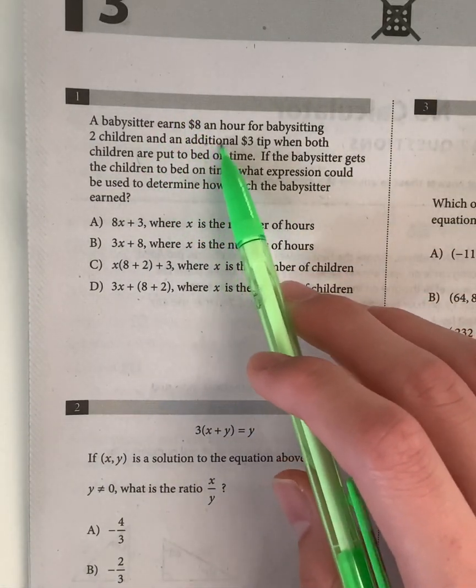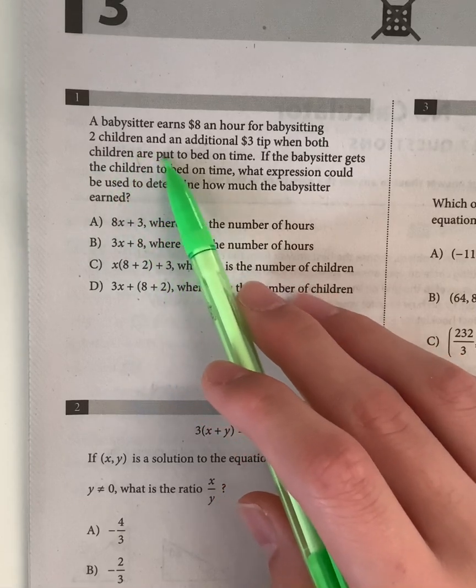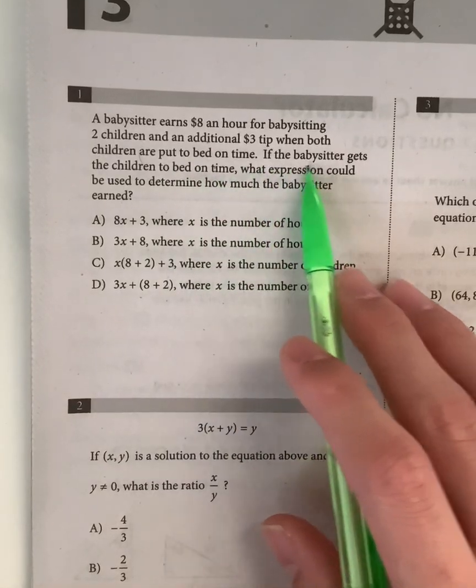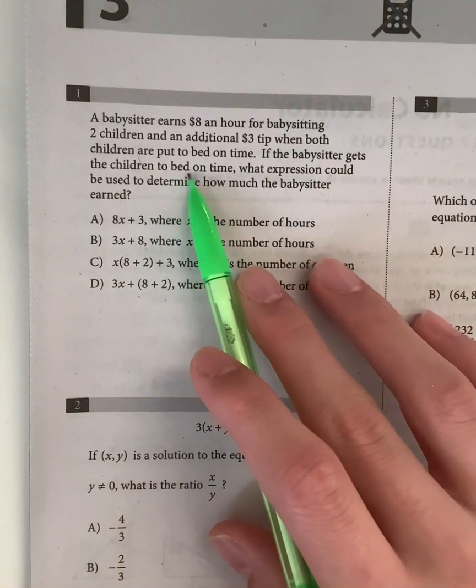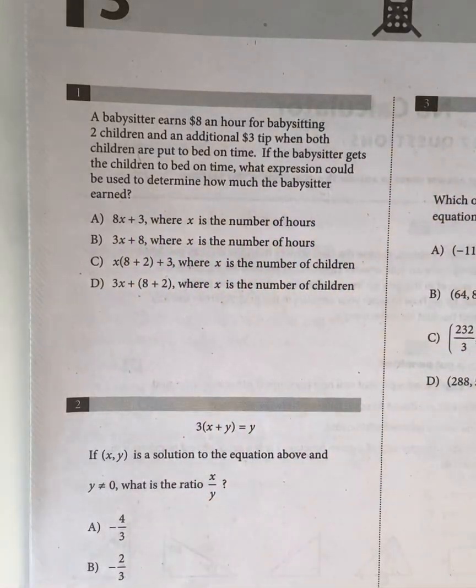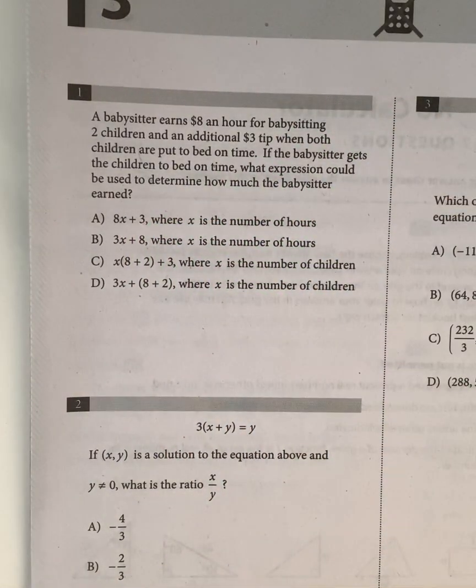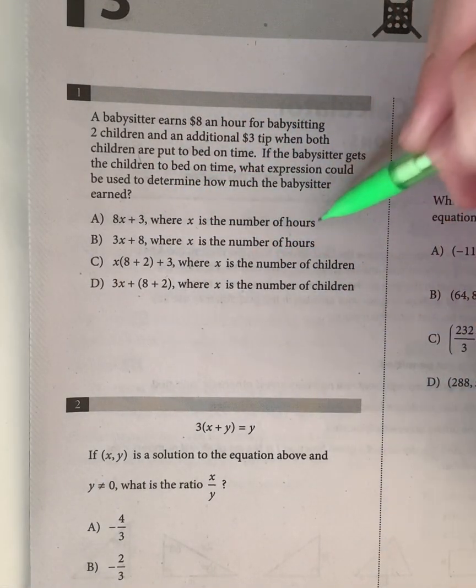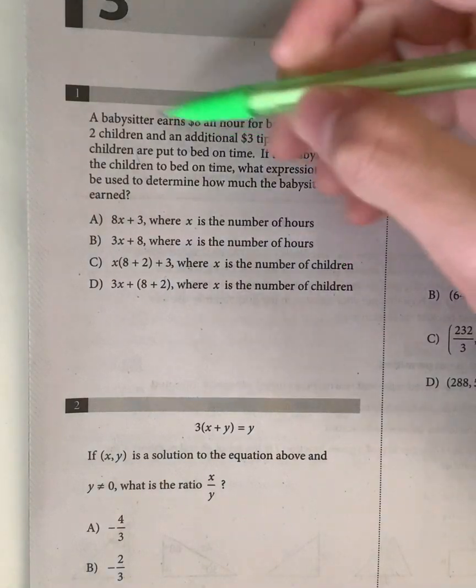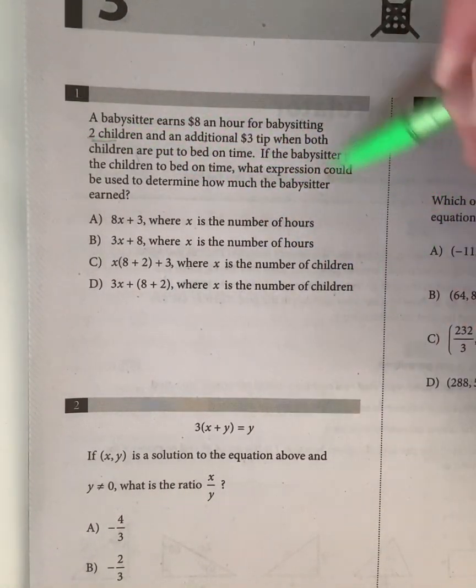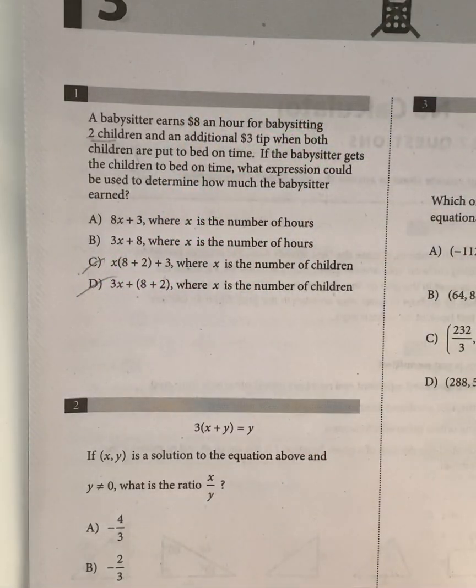A babysitter earns $8 an hour for babysitting two children and an additional $3 tip when both children are put to bed on time. If the babysitter gets the children to bed on time, what expression could be used to determine how much the babysitter earned? So basically, we have to write a literal equation. Let's just say x is the number of hours. Because the number of children don't really matter, because it says it's two children, so they're not going to be less or more children. So C and D are automatically eliminated.